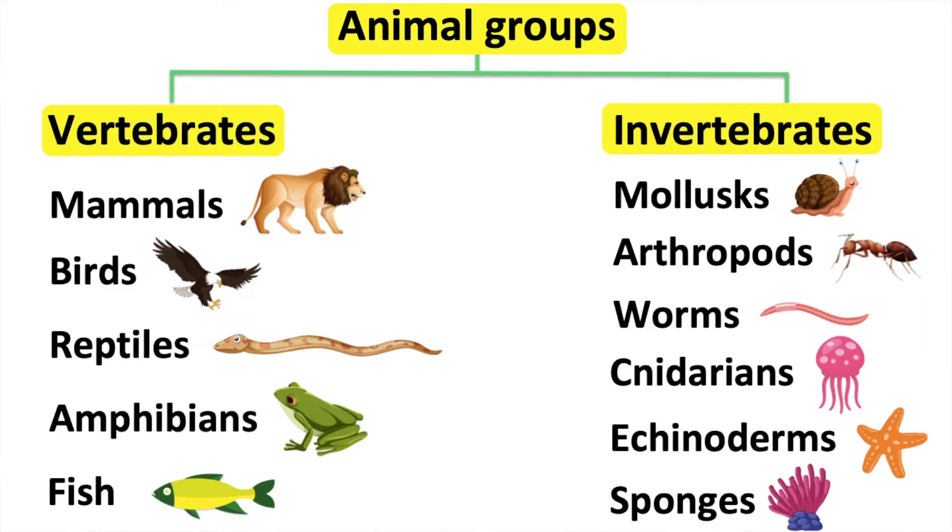Arthropods live on land. There are many different types of arthropods. For example, ants, spiders, crabs, and millipedes. Arthropods can have different numbers of jointed legs. Some have six, some have eight, some have ten, and some have even more than ten. They also have an exoskeleton.